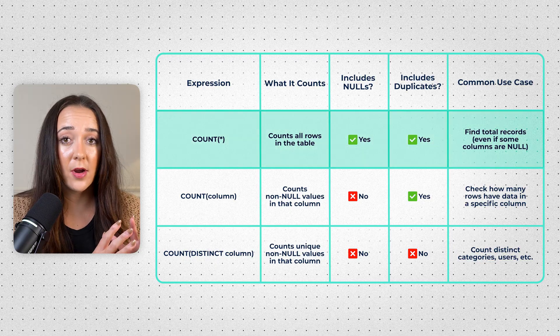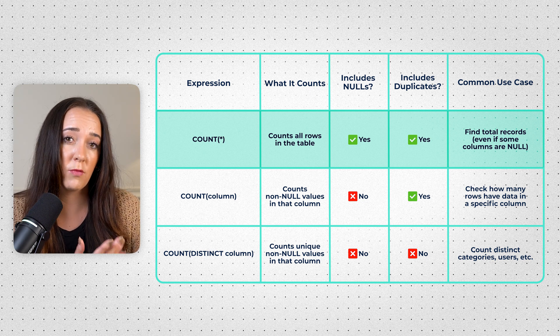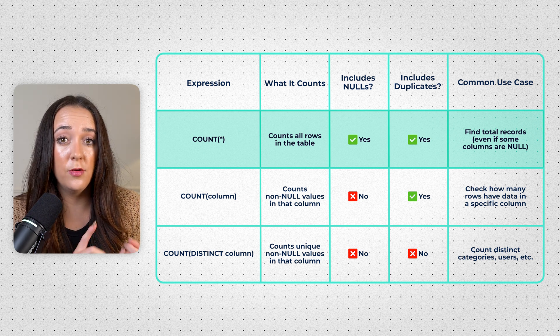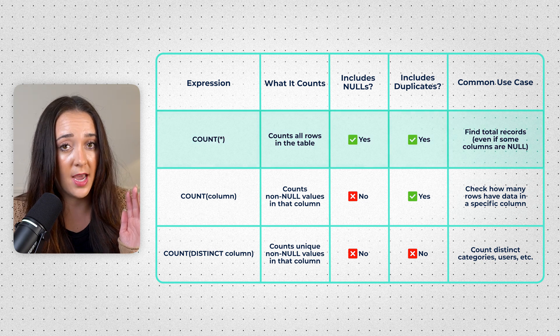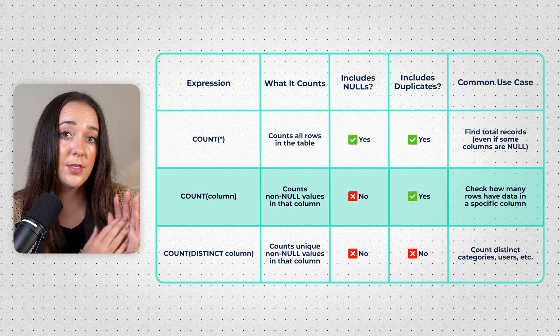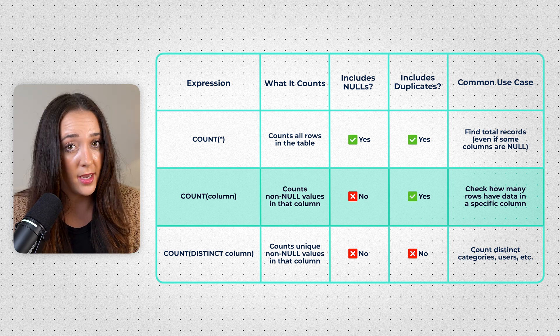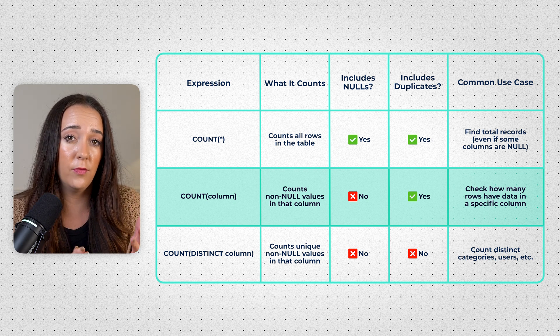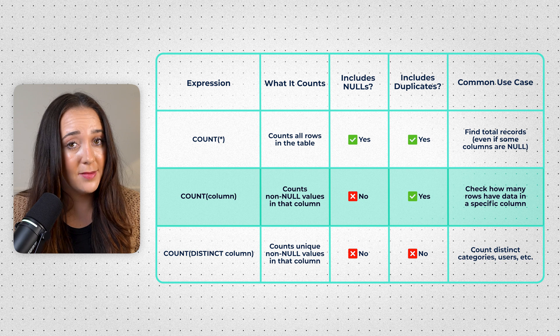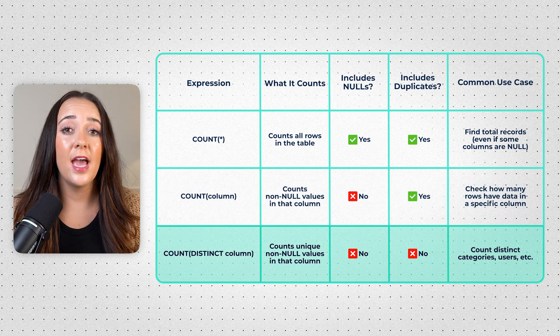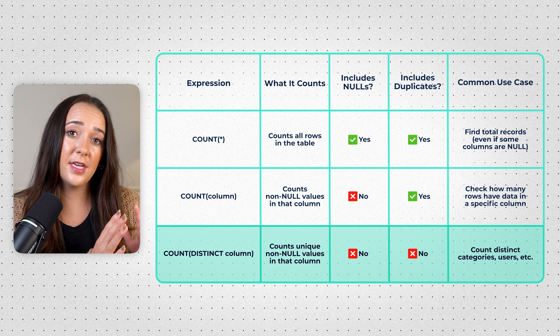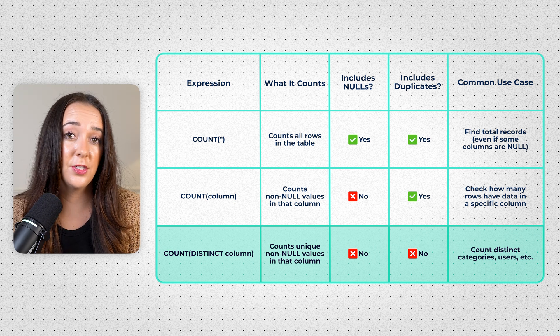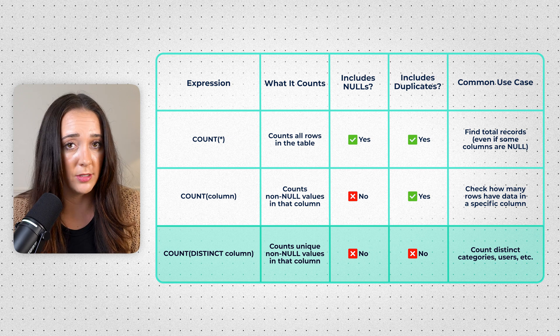Before we move on to counting with joins, let me recap. COUNT(*) counts all rows or records in a table or result set — it doesn't care about nulls or duplicates, it includes both. COUNT(column) counts all non-null values in a column — it counts duplicates but not nulls. If you want to count distinct non-null values, use COUNT(DISTINCT column). These are also listed in order of efficiency from a query optimization perspective.